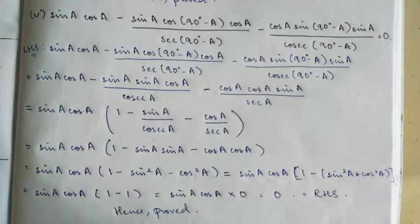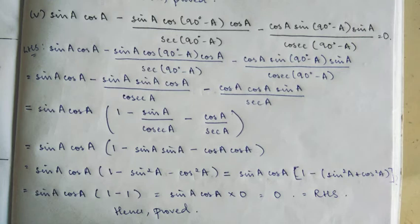Let's move on to question number 5. Now, for number 5, starting from the LHS: cos(90 minus A) using the formula equals sin A. And sin(90 minus A) equals cos A. For the third term, sin(90 minus A) equals cos A. In the next step, cos(90 minus A) equals sin A.